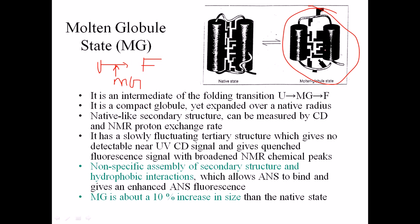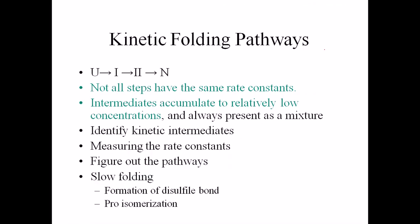Now let us look at the kinetics of protein folding. Going from the unfolded state towards the folded or native state, we pass through transition state one and transition state two. An important consideration is that not all steps have the same rate constant — the rate constant varies from step to step, and the intermediates accumulate at relatively low concentrations.